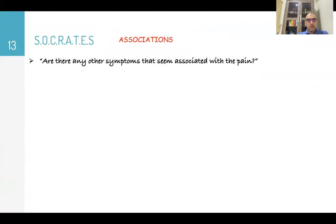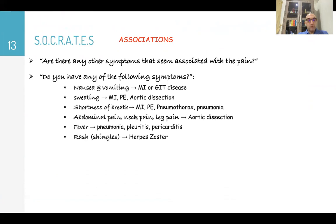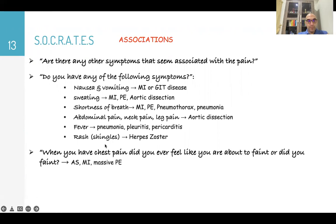Then for the A, associations, are there any other symptoms that seem associated with your chest pain? Do you have any of the following symptoms, like nausea and vomiting, like myocardial infarction or GIT disease? Sweating, like myocardial infarction, pulmonary embolism, aortic dissection? Shortness of breath, like myocardial infarction, pulmonary embolism, pneumothorax or pneumonia? Abdominal pain, neck pain or leg pain, which refers to aortic dissection? Fever, very important, like pneumonia, pleurisy or pericarditis? Rashes or shingles, like in herpes zoster disease? When you have chest pain, did you ever feel like you are about to faint, or did you actually faint, like in aortic stenosis, myocardial infarction, or massive pulmonary embolism? Has there been any recent viral illness or chest infection, like what happens with pneumonia or pleurisy?